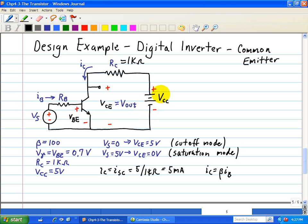For the transistor to be in saturation mode, note what it does mean is that beta IB must be greater than ISC, which we found to equal 5 milliamps.